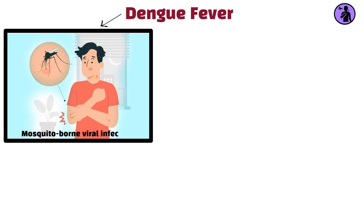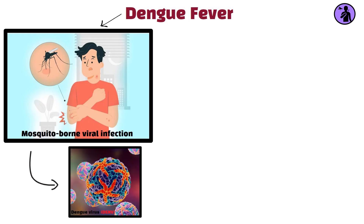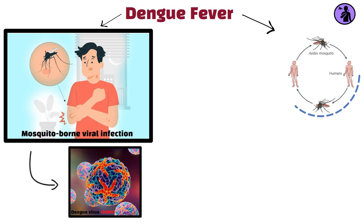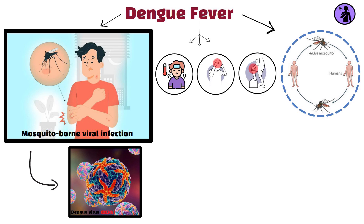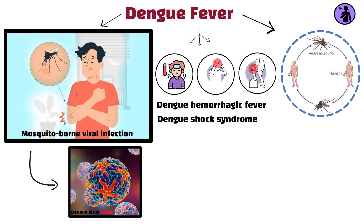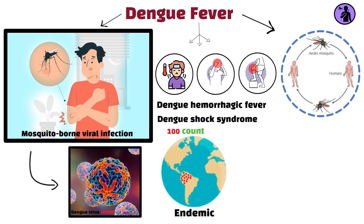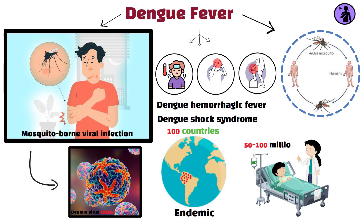Dengue fever, ongoing. Dengue fever is a mosquito-borne viral infection caused by the dengue virus, DENV, transmitted by Aedes mosquitoes. Dengue causes flu-like symptoms such as high fever, severe headache, and joint pain. Severe cases can lead to dengue hemorrhagic fever and dengue shock syndrome, which can be fatal. Dengue is endemic in over 100 countries, with an estimated 50 to 100 million infections occurring annually.